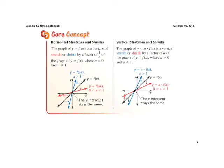Moving into our core concept: horizontal stretches and shrinks. We have y equals f of a times x. If we have a number being multiplied in the middle of our function, we know it's going to be a horizontal stretch or shrink. In this, the y-intercept stays the same. If that number being multiplied to x is greater than 1, we have a horizontal shrink, and it shrinks towards our y-axis. If that number is between 0 and 1, it's a horizontal stretch, which means it stretches away from our y-axis.